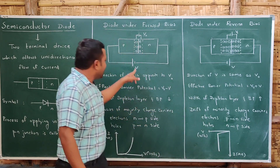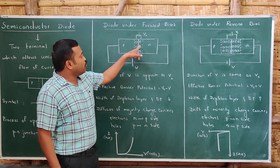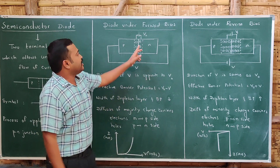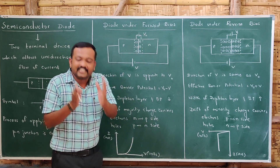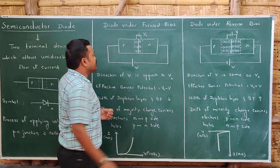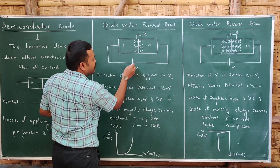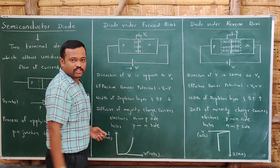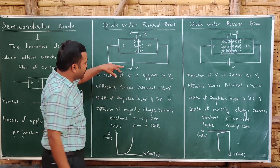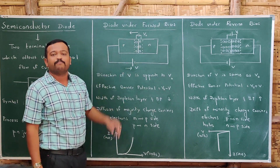The voltage which we apply is called the applied voltage, and already there is a voltage at the junction called the barrier potential — let us call it V₀. The direction of the applied voltage is plus to minus, and the direction of the barrier potential is also plus to minus. In forward bias, the direction of the applied voltage is opposite to the direction of the barrier potential.